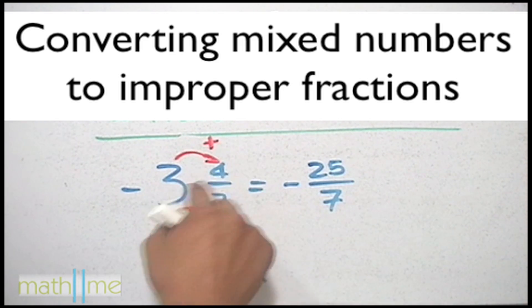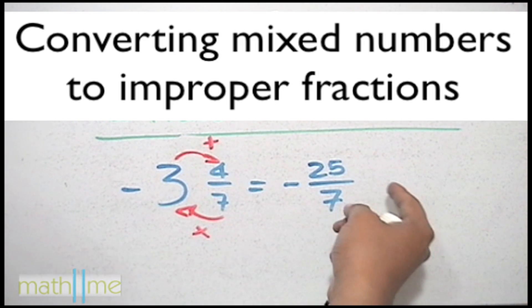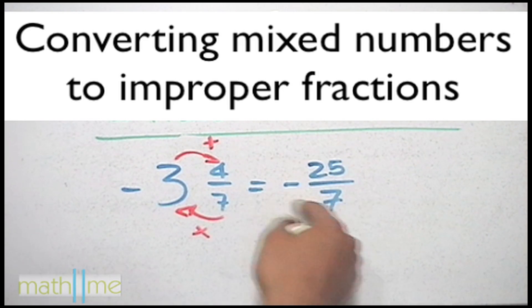And we can prove this just doing the division. So how many times does 7 go into 25? It's going to be 3 with 4 remaining. And this is the answer. We are done with this mixed number.